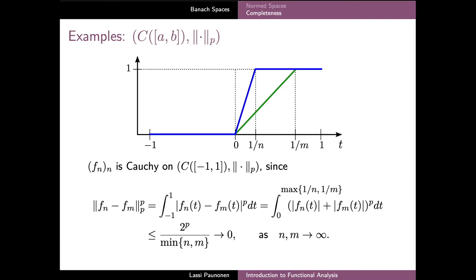On this interval, which becomes very short as n and m increase, we make a crude estimate using the triangle inequality to bound the difference by the sum of the absolute values. Since both function values are at most one, we can estimate the integrand by 2 to the power p and take it out of the integral. We are then left with only the length of the integration interval, which is precisely one over the minimum of n and m.